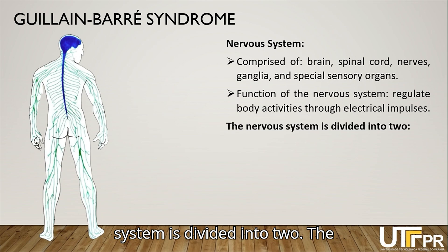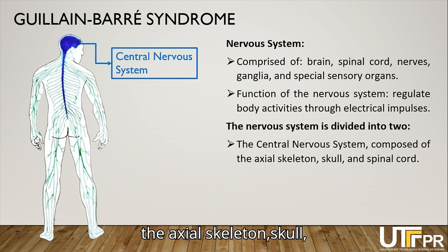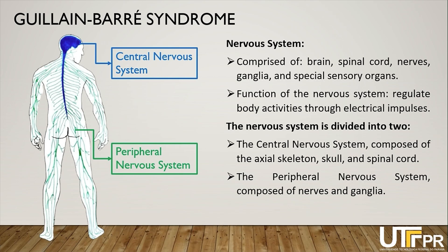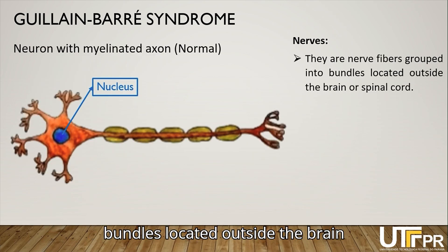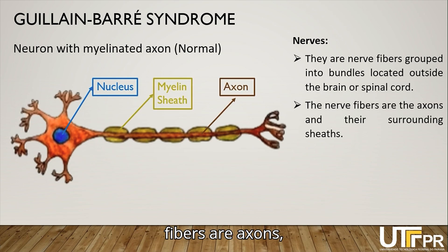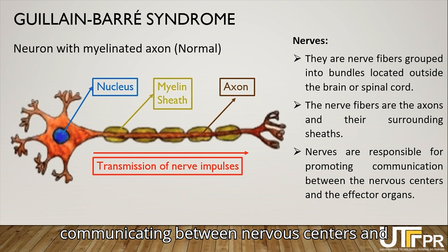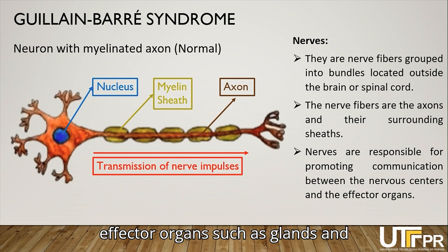The nervous system is divided into two: the central nervous system, consisting of the axial skeleton, skull, and spine; and the peripheral nervous system, consisting of nerves and ganglia, which controls our body. Nerves are nerve fibers grouped in bundles located outside the brain or spinal cord. The nerve fibers are axons, extensions of neurons, and their sheaths. Nerves are responsible for communicating between nervous centers and effector organs such as glands and muscles, as well as for sensitivity.